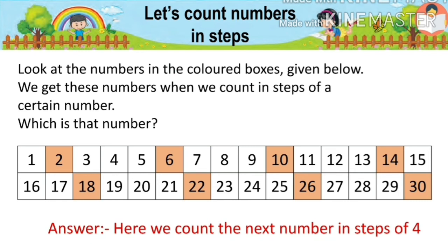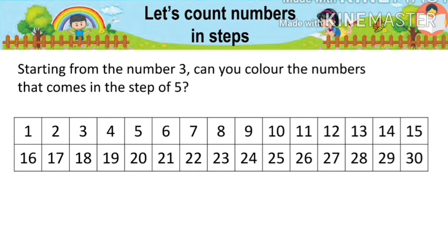Now, starting from the number three, can you color the numbers that come in steps of five? We start coloring at three. Then we count forward five steps: one, two, three, four, and five — we get eight. We color it. Again we count five steps forward.